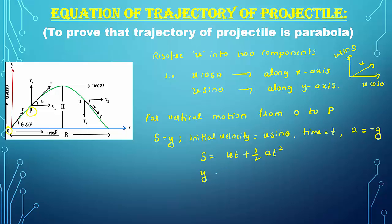Substituting into s = ut + ½at²: in place of s write y; in place of u write u·sinθ; time is t; in place of a write minus g. So y = u·sinθ·t + ½·(−g)·t², which gives y = u·sinθ·t − ½g·t². This is equation 1 for vertical motion.